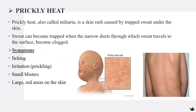The next problem is prickly heat, also called miliaria. It is a skin rash caused by trapped sweat under the skin. Sweat becomes trapped when the narrow ducts through which sweat travels to the surface become clogged. Symptoms of prickly heat include irritation, itching, small or large blisters, and red areas of the skin.